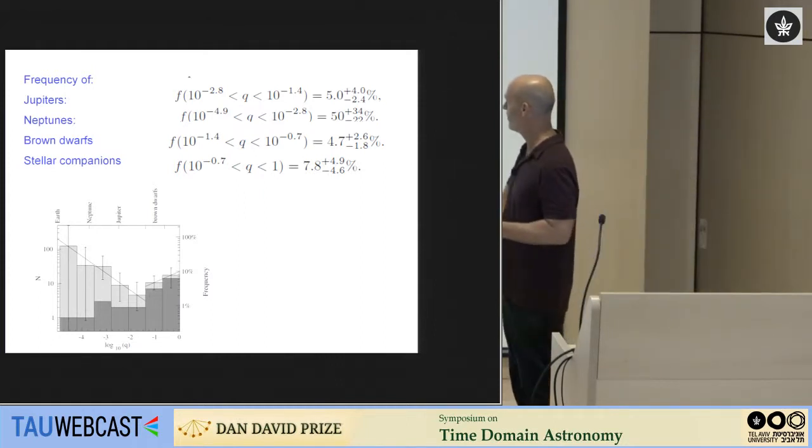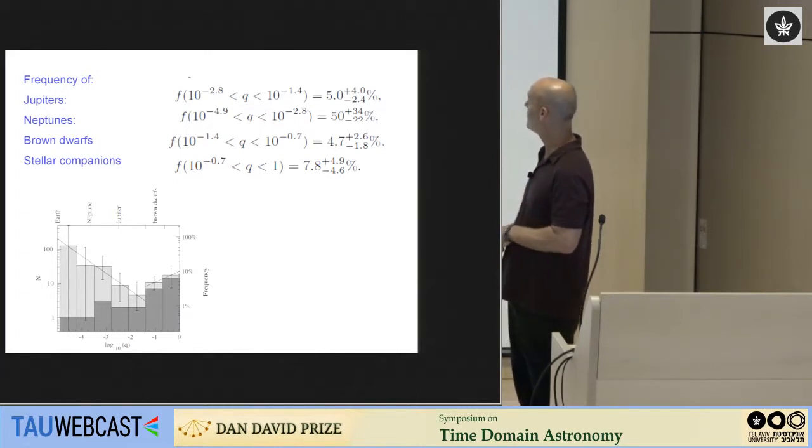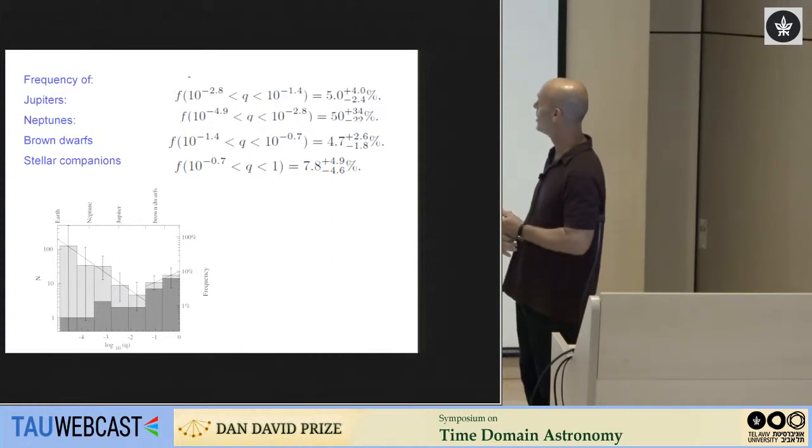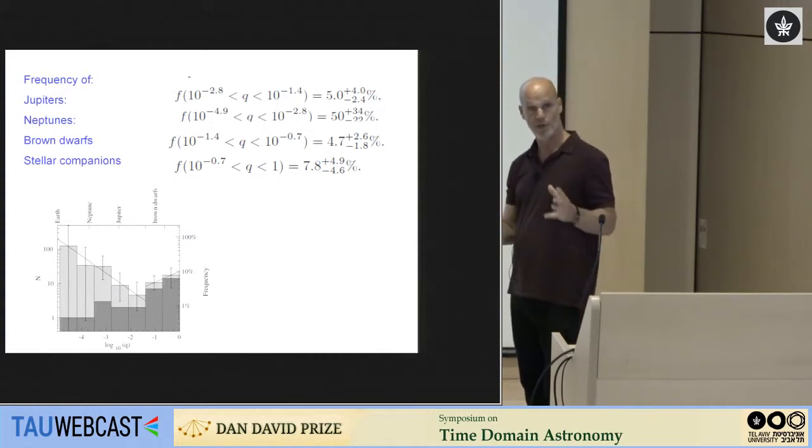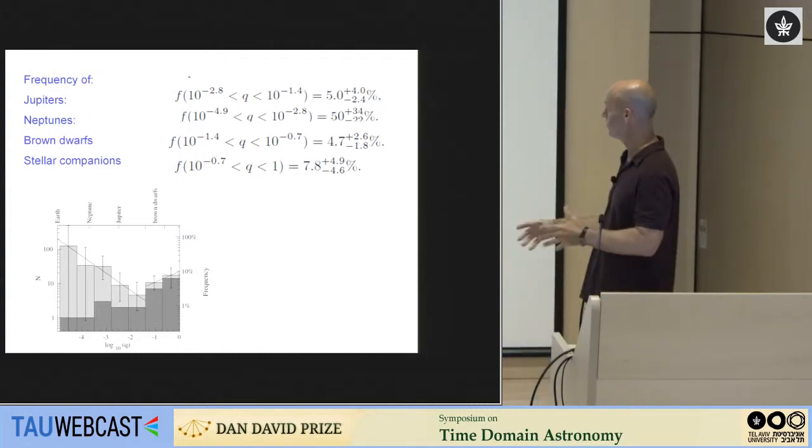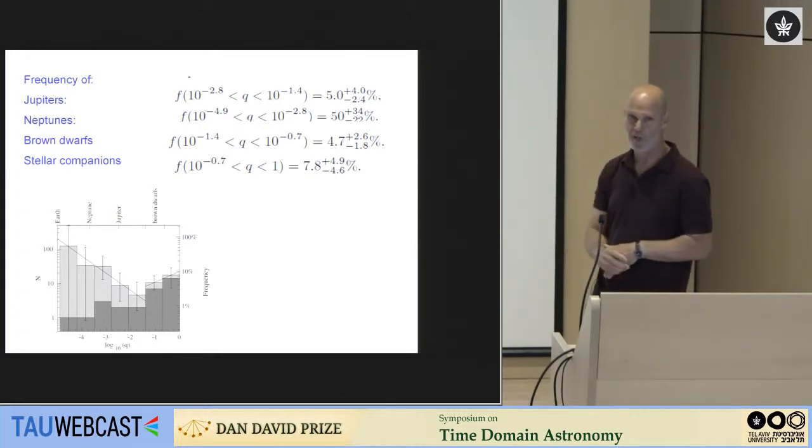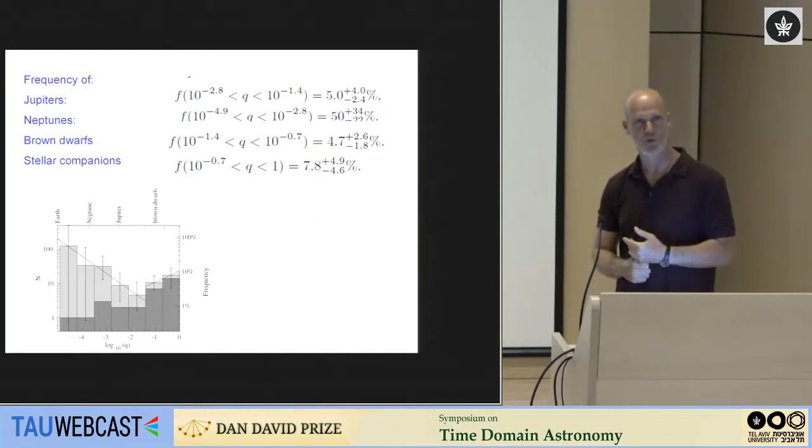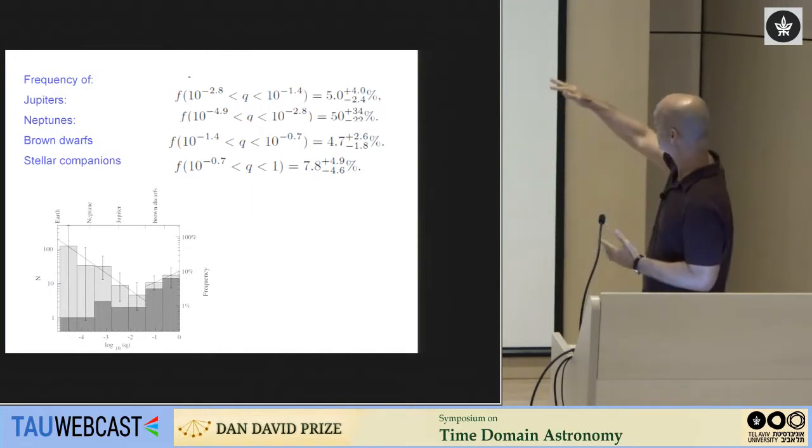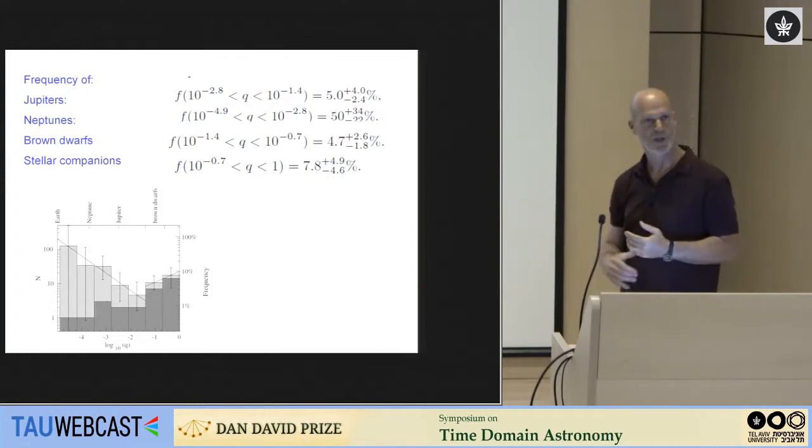And then if you want to ask what is the planet frequency for a given mass ratio, you just take the number of planets that you detected with that mass ratio and divided by the sum of all the efficiencies. It's very simple. And this is the main result of this experiment. This is the mass distribution of companions to the host stars, whether planets or stellar binary companions, as a function of mass ratio. So the dark areas is the actual numbers detected, and you see that they're very low. These are stars, everything to the left of this bin here. That's the planets. These are stellar companions.